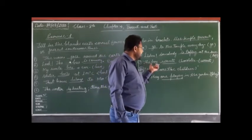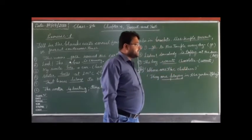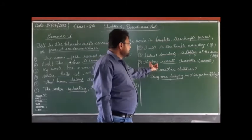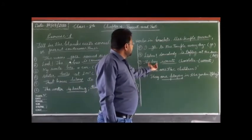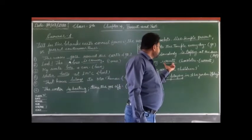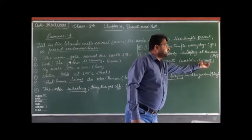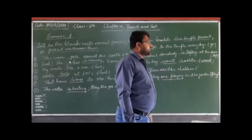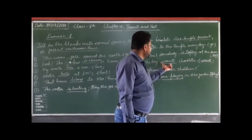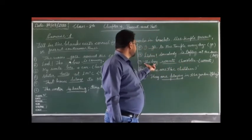The ninth sentence is: the boy wants chocolate. This sentence shows the habitual activity of the boy. We keep the verb in its base form and apply 's' or 'es' because the subject is singular. So the sentence will be: the boy wants chocolate, because 's' is applied since the subject is singular.